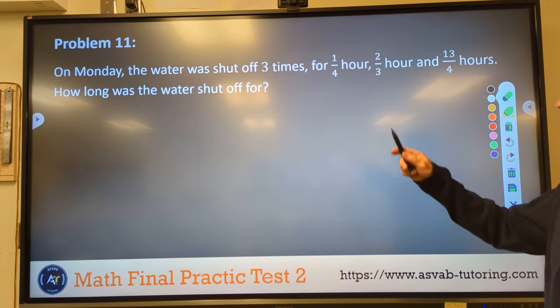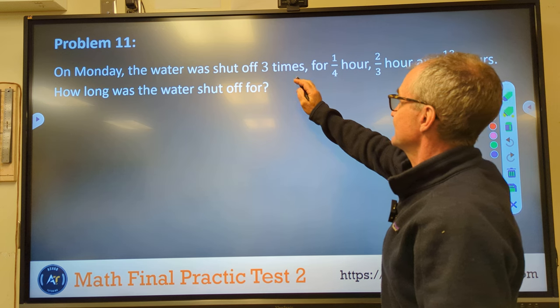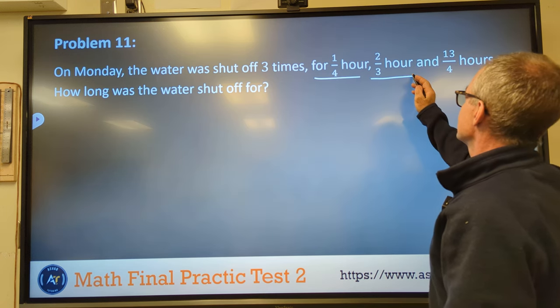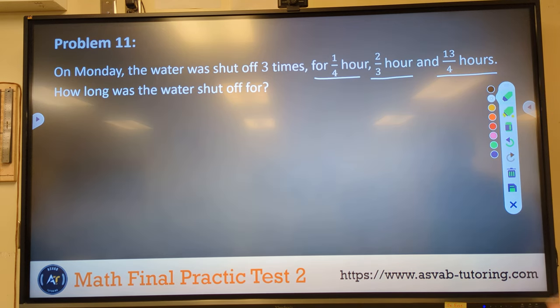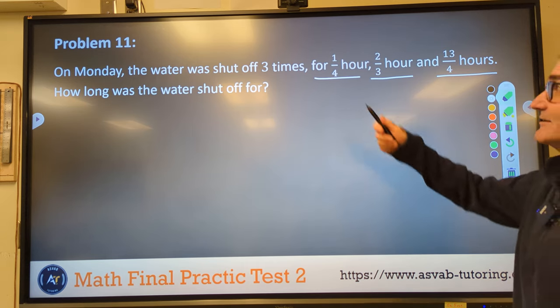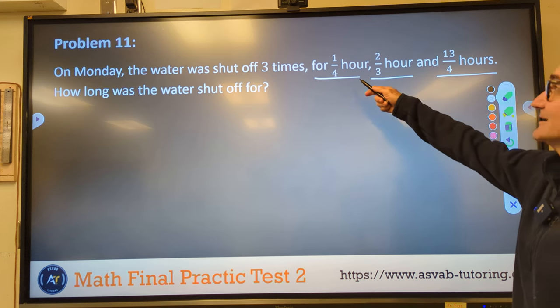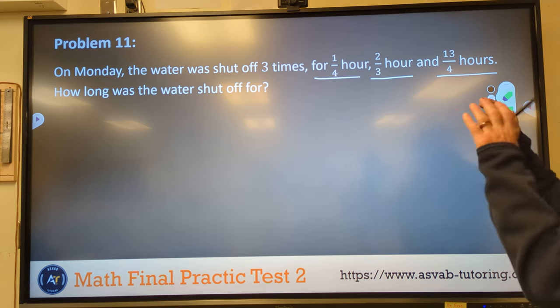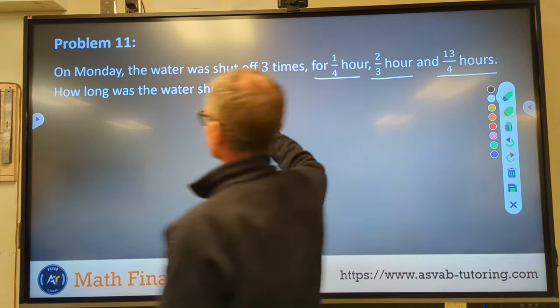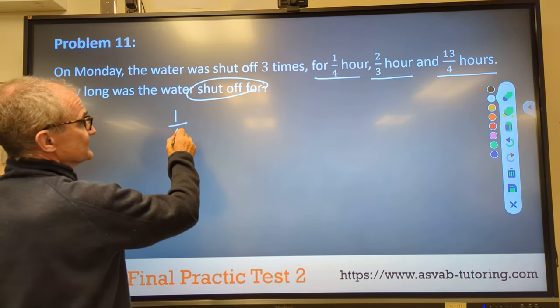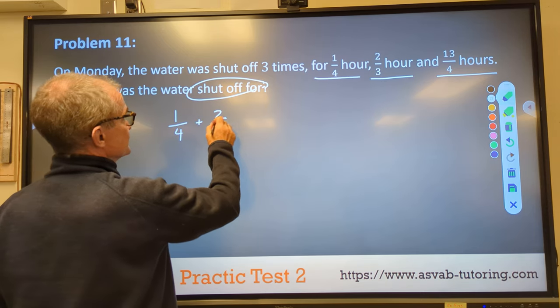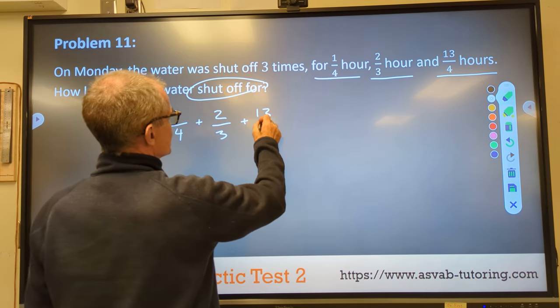Number 11, on Monday, the water was shut off three times for a quarter hour, two thirds of an hour, and 13 fourths of an hour. Kind of a funny way to refer to that. Probably is supposed to be 1 and 3 fourths, but we'll call it 13 fourths. So I've got to add all three of these up to get the total time the water was shut off. So I've got to add those three together, so I have one quarter plus two thirds plus 13 fourths.